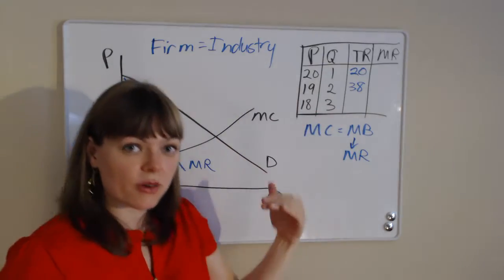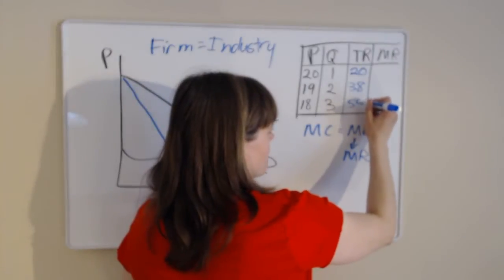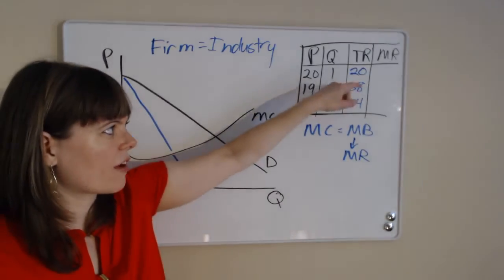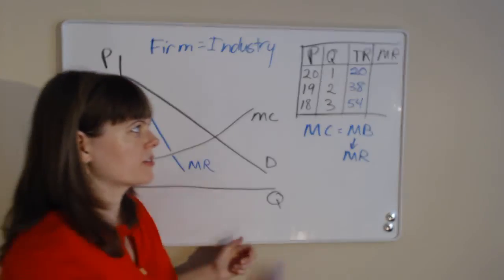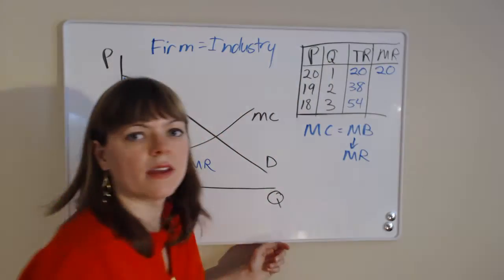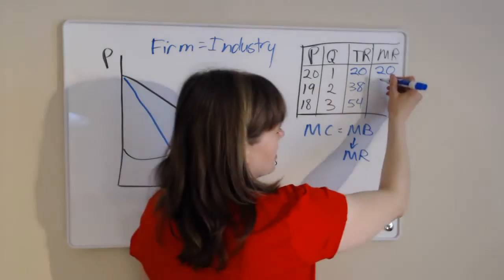So we have $38 total in revenue if we sell two products. If we sell three products, we have to lower the price to $18. So $18 times 3 is $54. And the marginal revenue is simply the extra revenue going from one to two to three people. So for going from zero to one, we get $20 extra. Going from one to two, we see that we only get $18 extra.